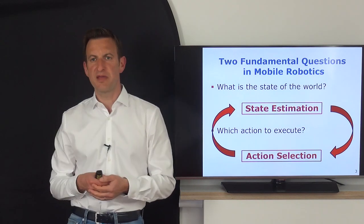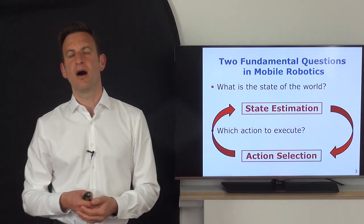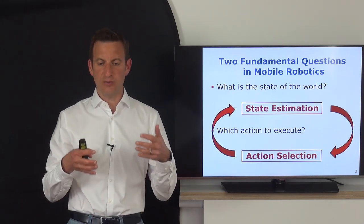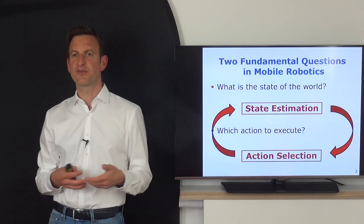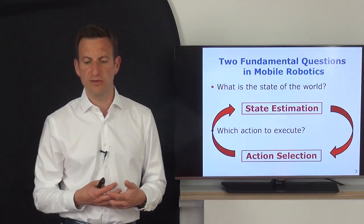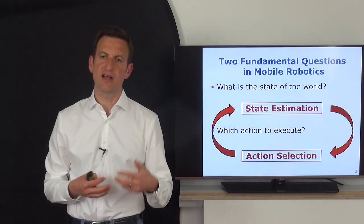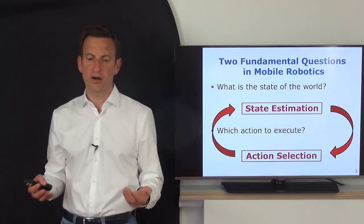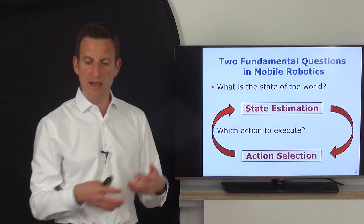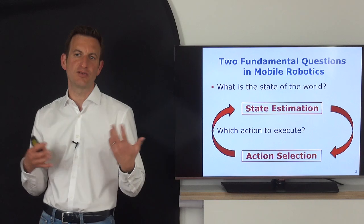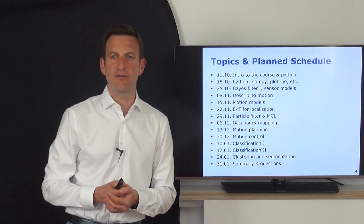Most of the things that we are discussing in this course are either related to state estimation or are related to action selection. We start with some fundamental basics about how to perform state estimation from a probabilistic point of view, how to estimate how the environment looks like, how to estimate where we are in the world, how to select actions in terms of how to plan, how to move through the environment, and how to interpret the world around us.